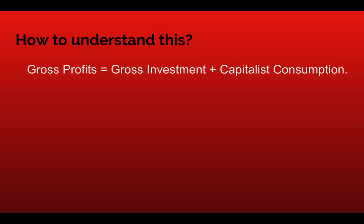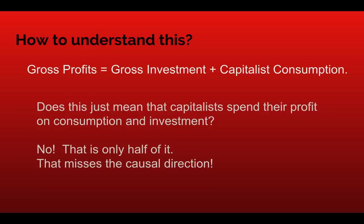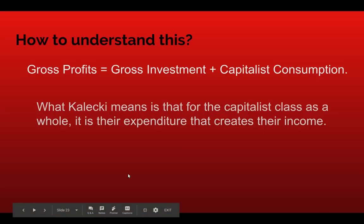How do we understand this? Does it just mean that capitalists spend their profit on consumption and investment? Well, they do — that's true — but that's not all of it. If you view it that way, you miss the causal relationship involved. It's not that profits come first and then investment and capitalist consumption come after. The direction is the other way around. What Kalecki says is that for the capitalist class as a whole, it's their expenditure that creates their income. It's what they spend on investment and consumption that determines how much profit they'll make.